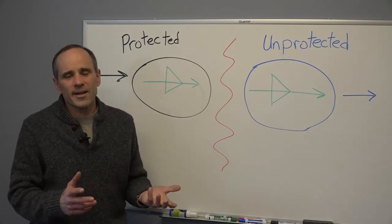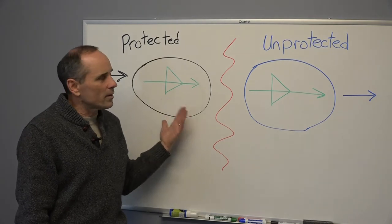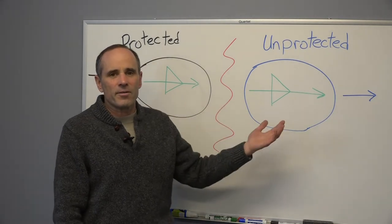So that's a high level overview of a data diode. It uses physics, it uses components to block people from coming in while allowing all kinds of data to be transferred out of the plant.